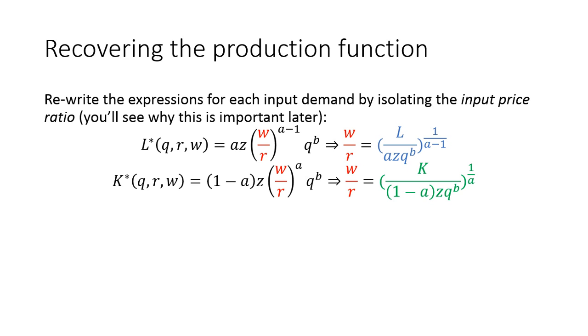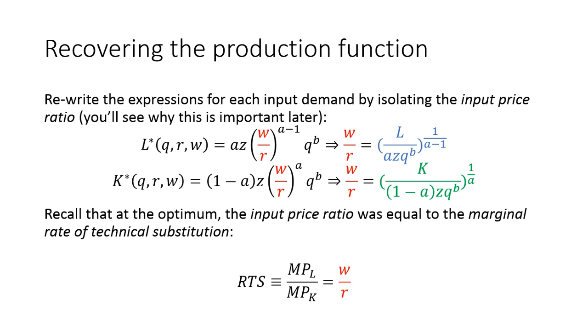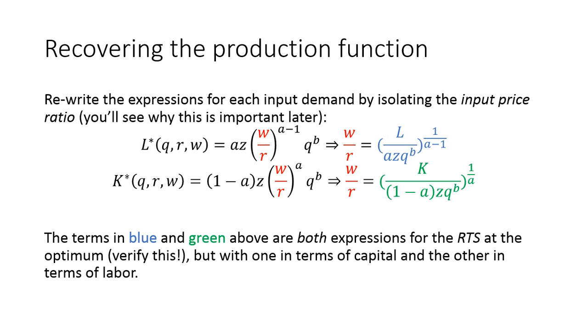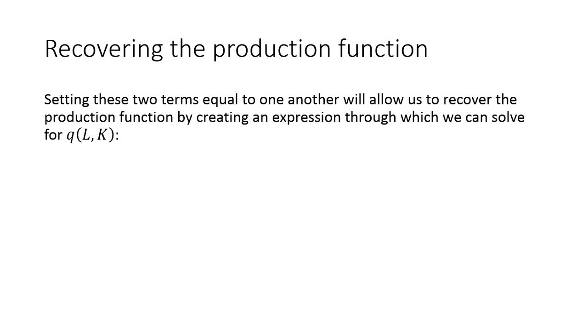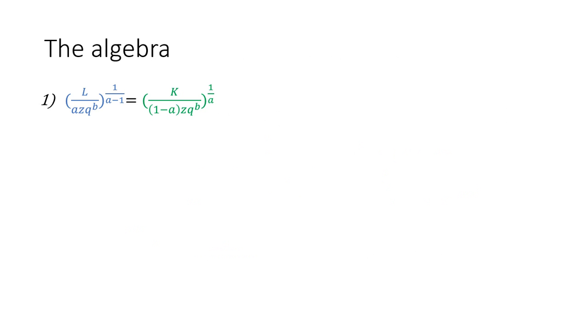Now we're going to go through how to recover the production function. I've recovered now each of the input demands using Shepard's Lemma by taking that partial derivative. What I'm going to do next to recover the production function is I'm going to solve for these price ratios within each of the input demand bundles, because remember what the price ratios are equal to. At that point of tangency, the price ratios are each equal to the rate of technical substitution, so that these terms in the blue and in the green, those are both expressions for the RTS.